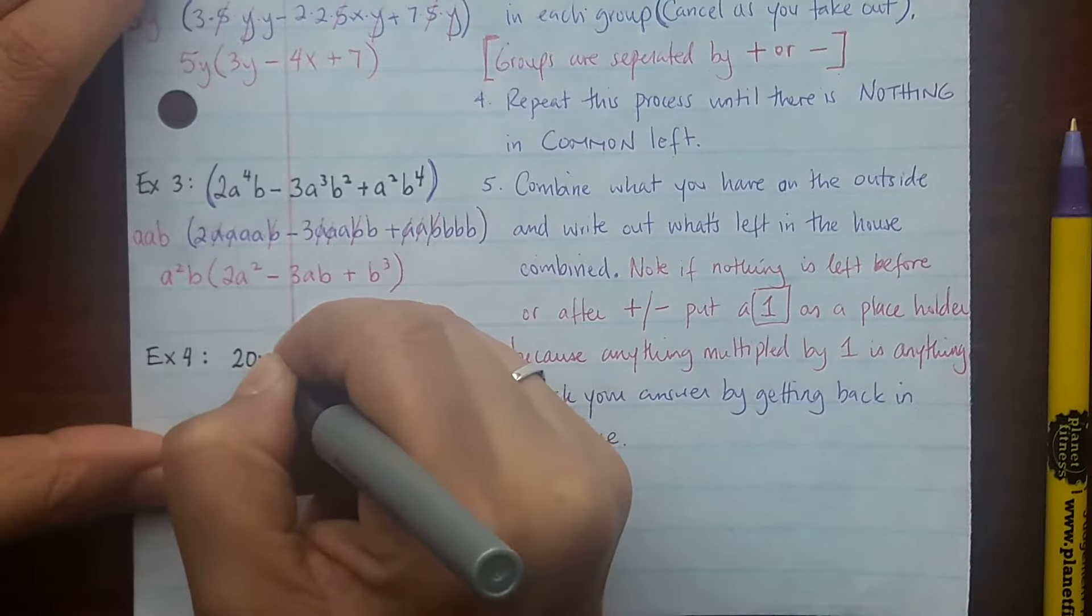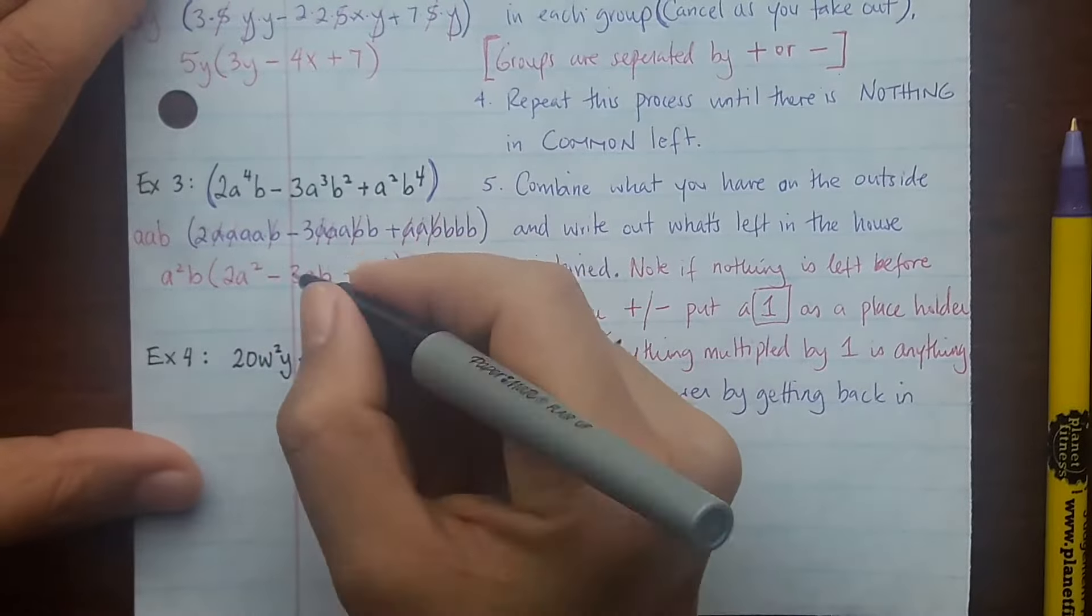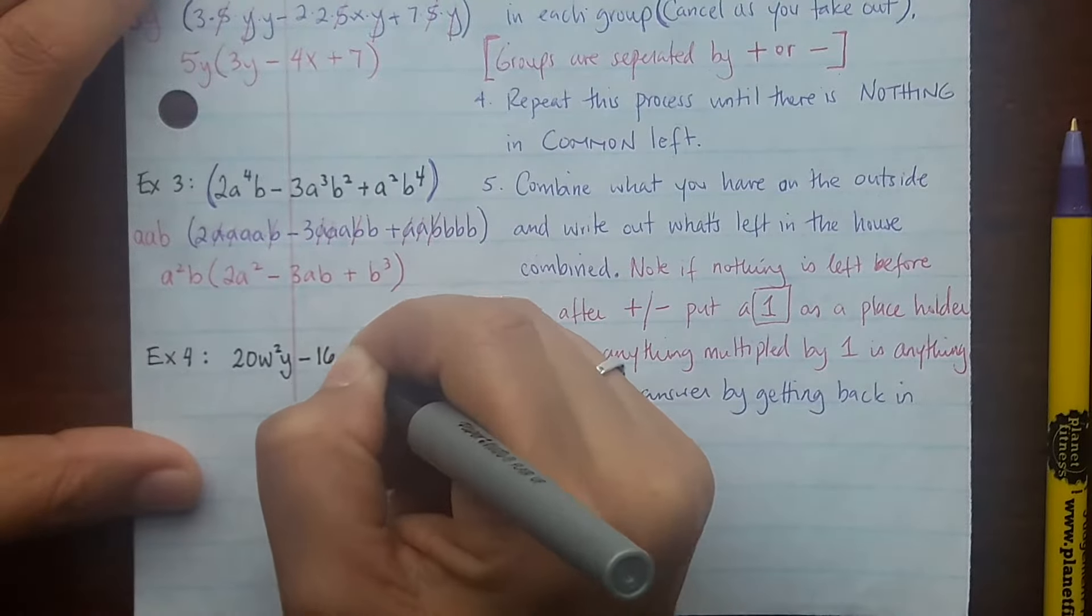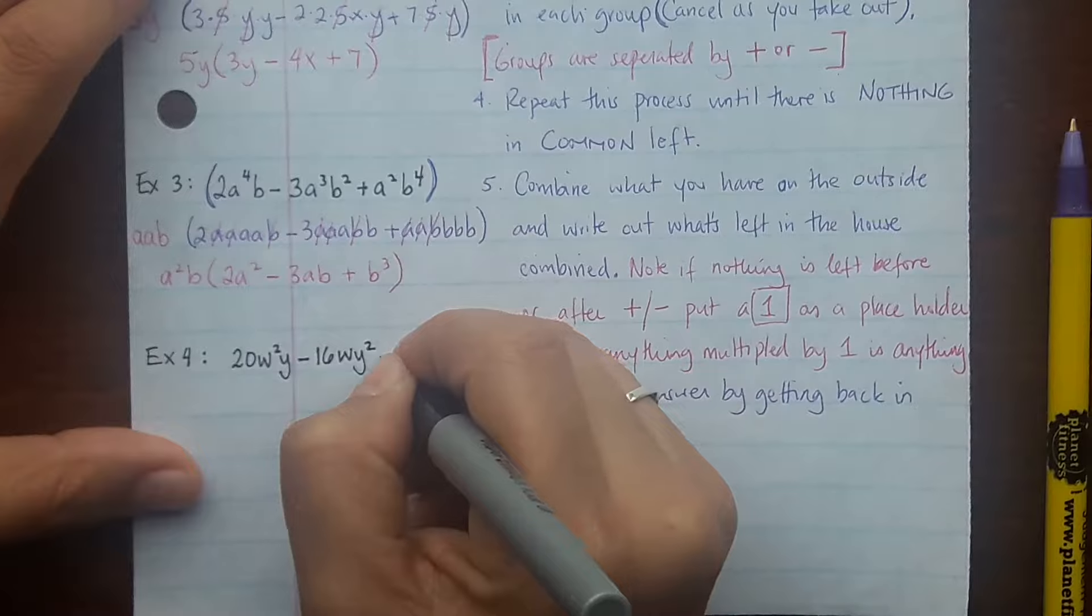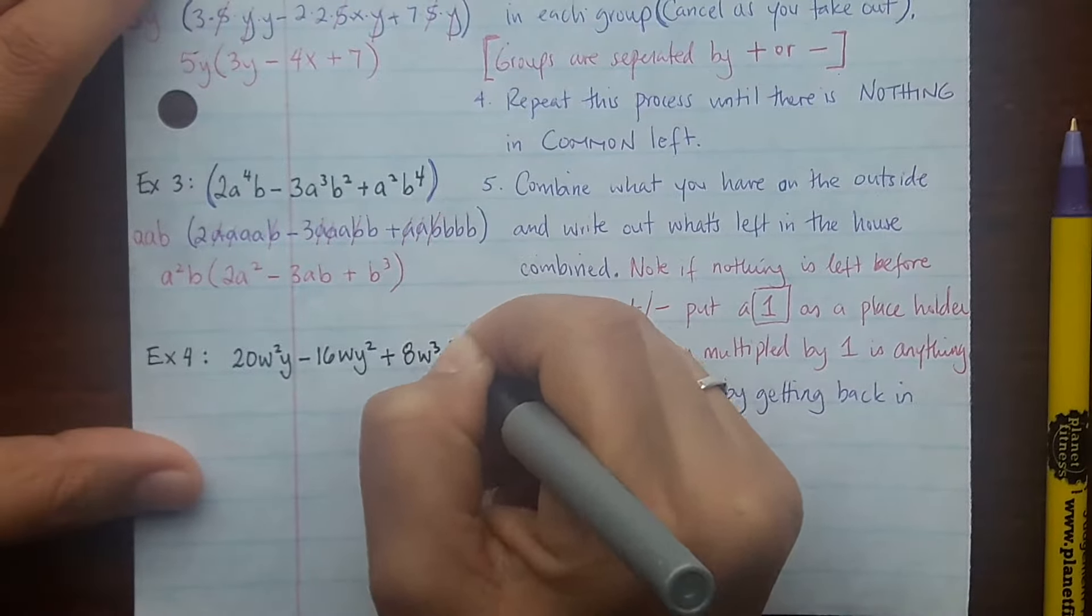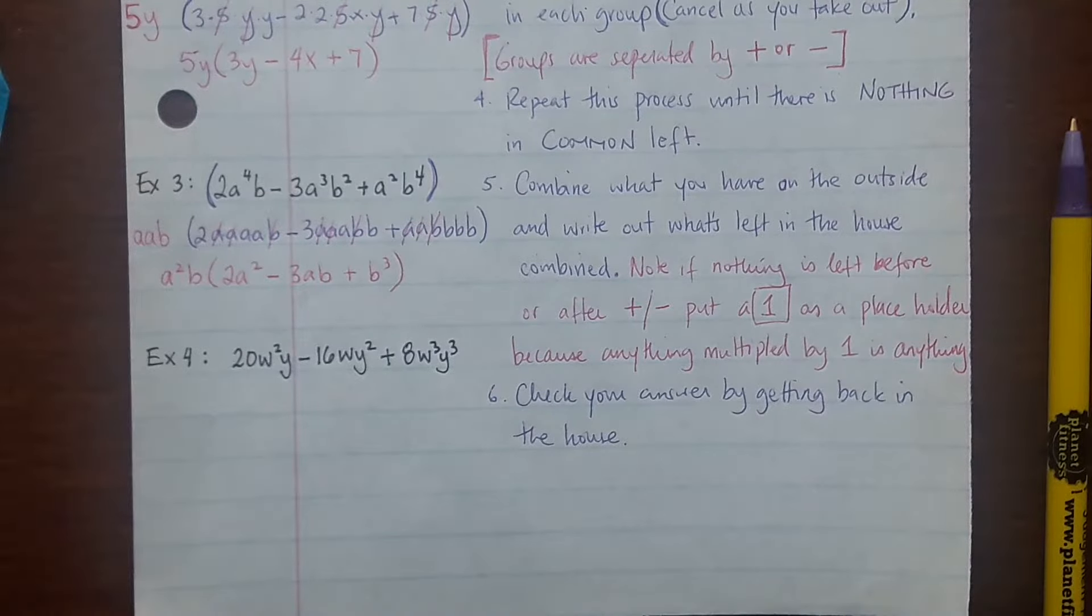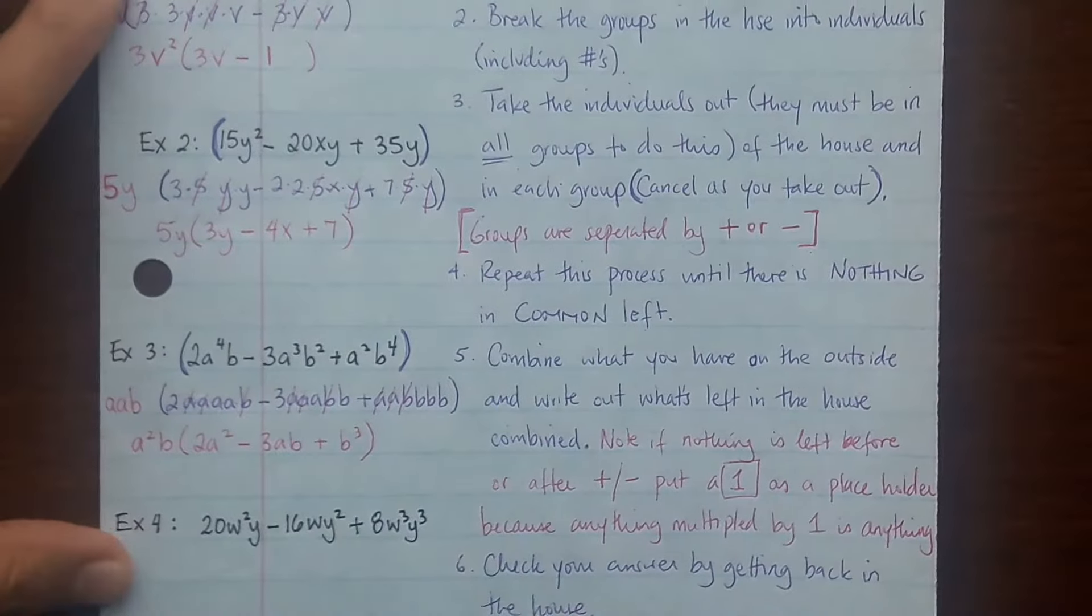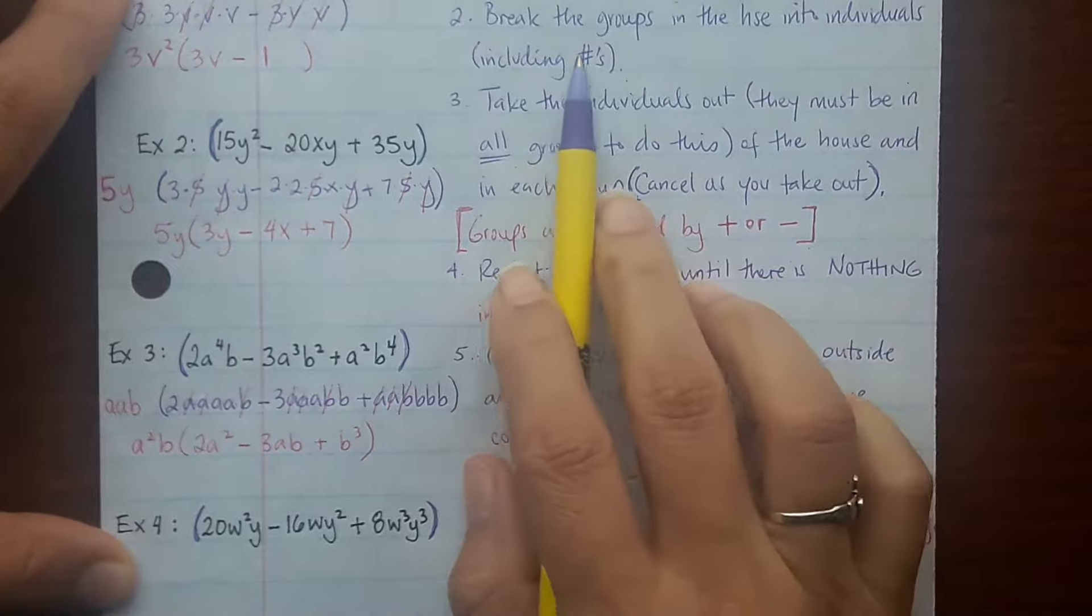Do one final example. Let's say you had 20w²y - 16wy² + 8w³y³. So again start by putting parenthesis around the entire thing, or a house.